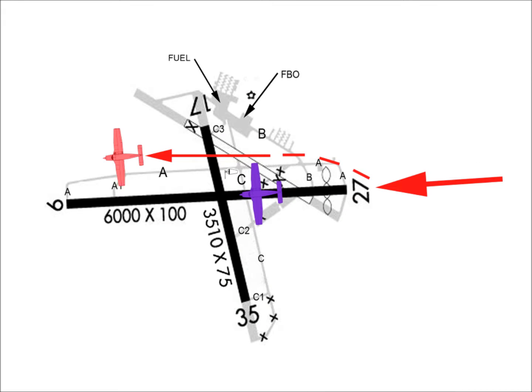If the cause of the rejected landing was a traffic conflict on the runway, then the pilot should offset the aircraft's flight path to one side of the runway so the conflicting traffic can be monitored throughout the climb out. Unless the situation dictates otherwise, a side step maneuver to the right of the runway gives the left seat pilot the best view of the traffic. If the go-around was initiated for some other reason, then the pilot can continue straight ahead on the go-around.